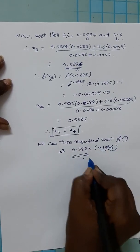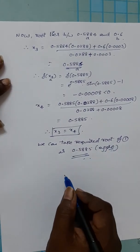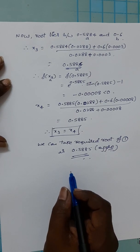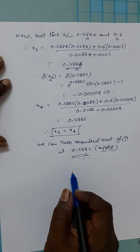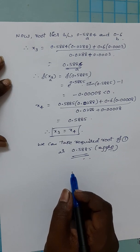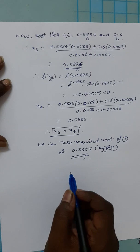Write it in brackets as approximately 0.5885. The very important thing in this problem is that since a trigonometric function is involved in the given equation, we must set the scientific calculator to radians mode. Thank you very much. In the next session, I will give another model. Bye.